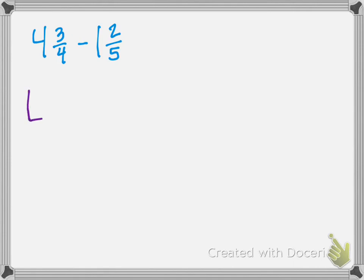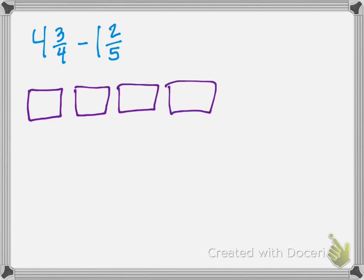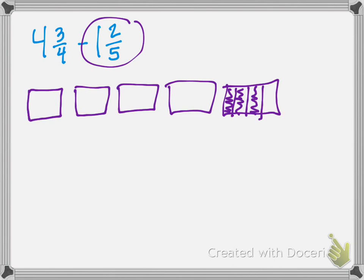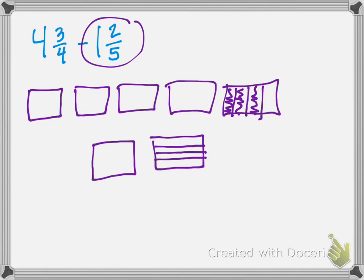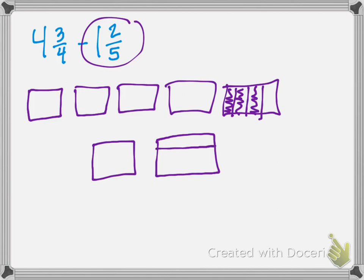First we draw the first number: we have 4 wholes and then our fraction, which needs 4 sections, and we're going to color in 3 of them. And then we're going to draw the number we're taking away from the first — 5 sections. We're going to color in 2 of them.